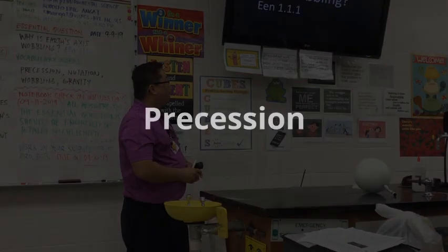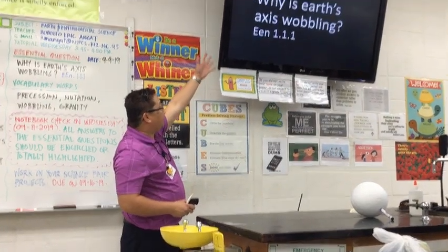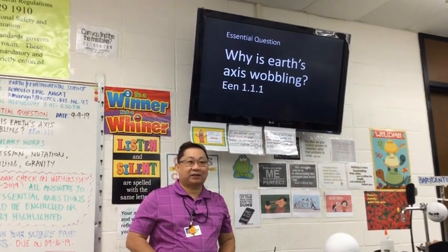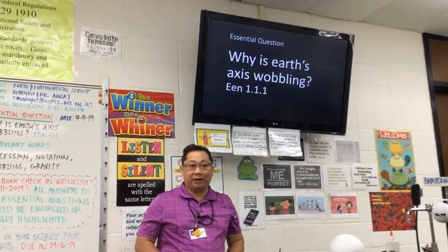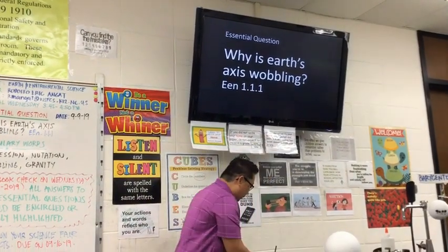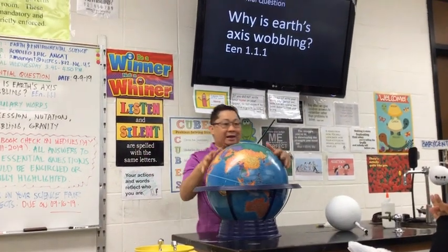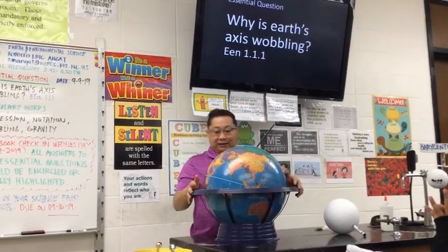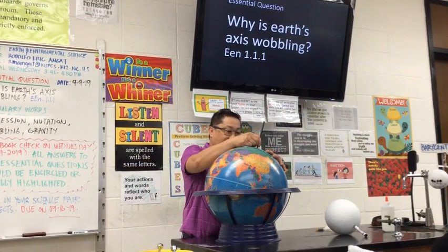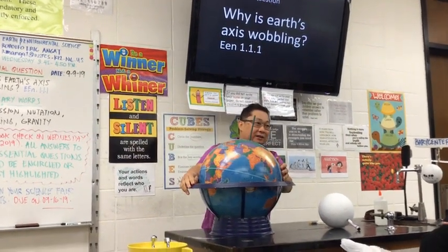The question is, why is Earth's axis wobbling? This is standard 1.1.1. Let's look at this globe here. This is the globe, and it's tilted at 23.5 degrees.